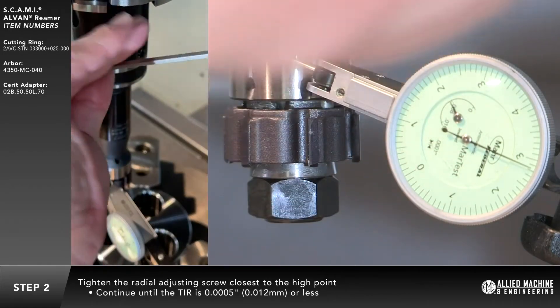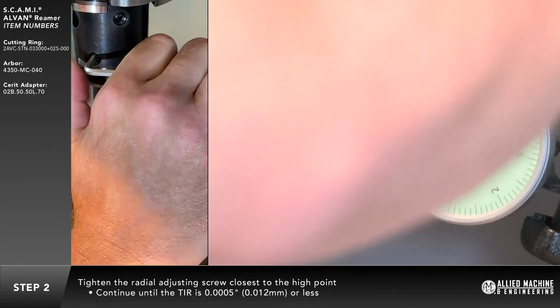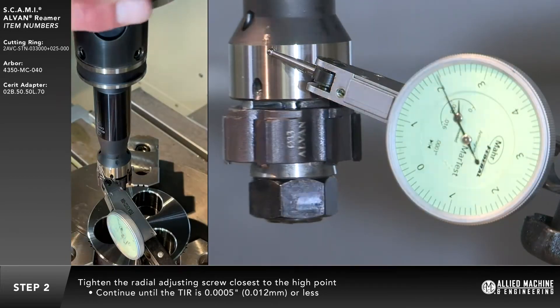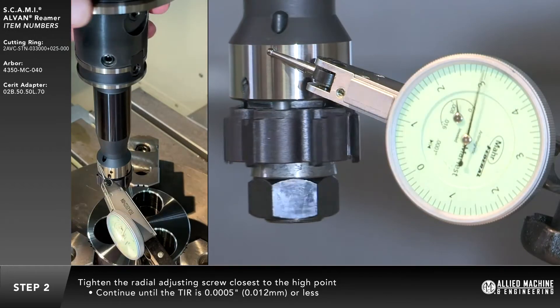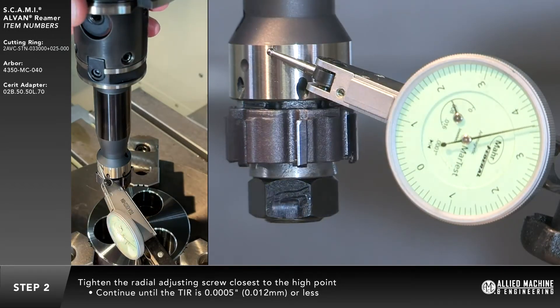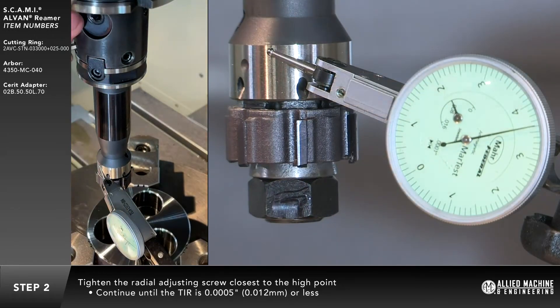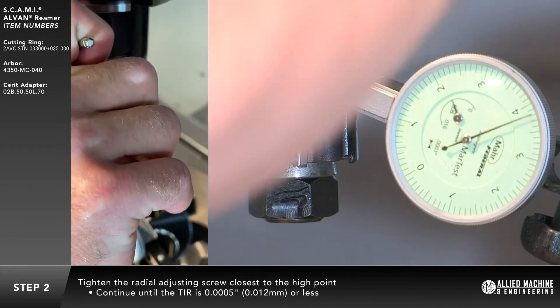Tighten the radial adjusting screw closest to the high point. Continue to do this until the TIR is 5 tenths of an inch or 0.012 millimeters or less.